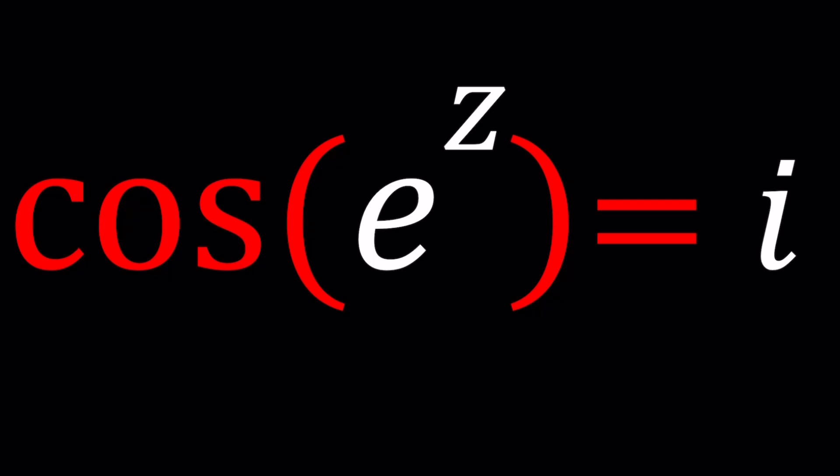We have cosine of e to the power z equals i and we're going to be solving for z values. Now quick question, z can be written as a plus bi and that's also the name of this channel, right? So do you think replacing z with a plus bi is going to help us with this problem? You can definitely test it out. Let's go ahead and plug it in.